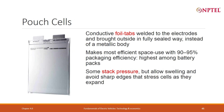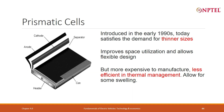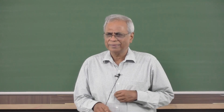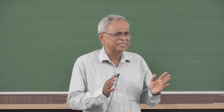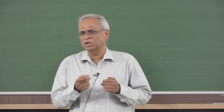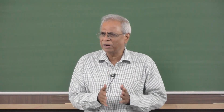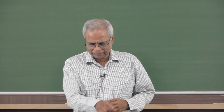The pouch cell has similar swelling issues. Conductive foil tabs welded to the electrodes and brought outside in a fully sealed manner make it even more efficient than prismatic sealing. Pressure management is very important for pouch cells. For the aluminum-case prismatic, pressure is less critical — somewhat important, but more important in pouch cells.